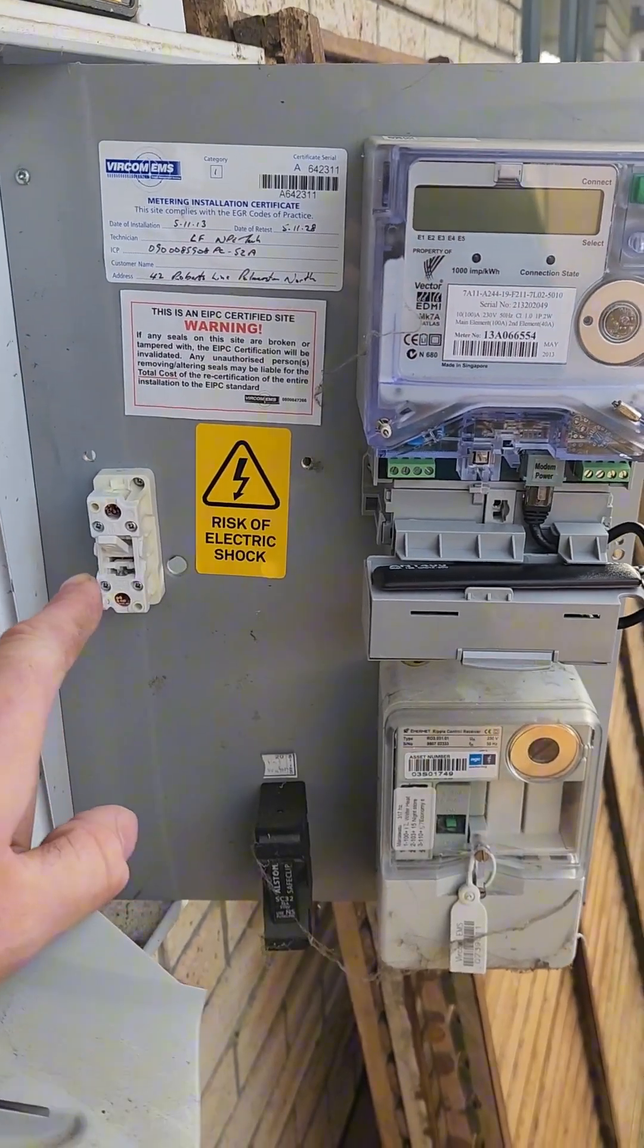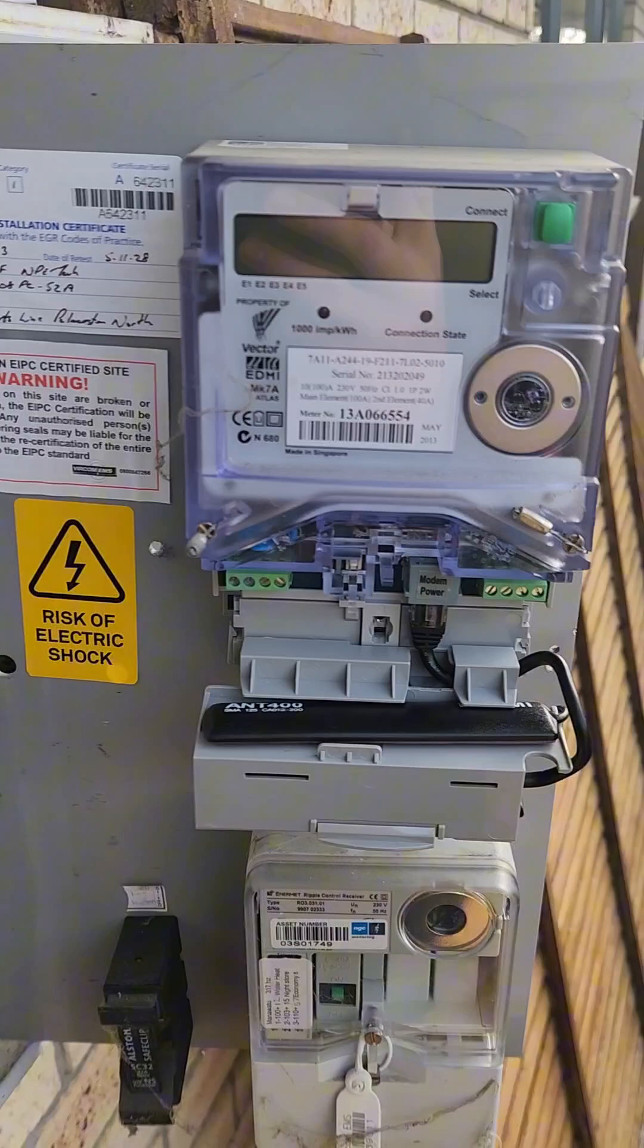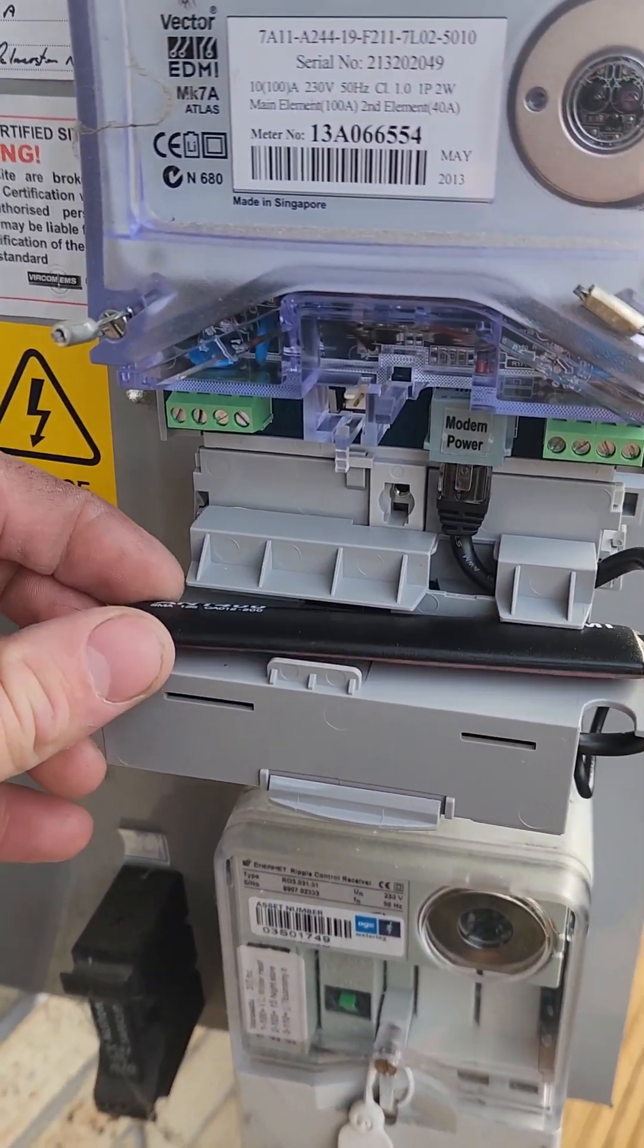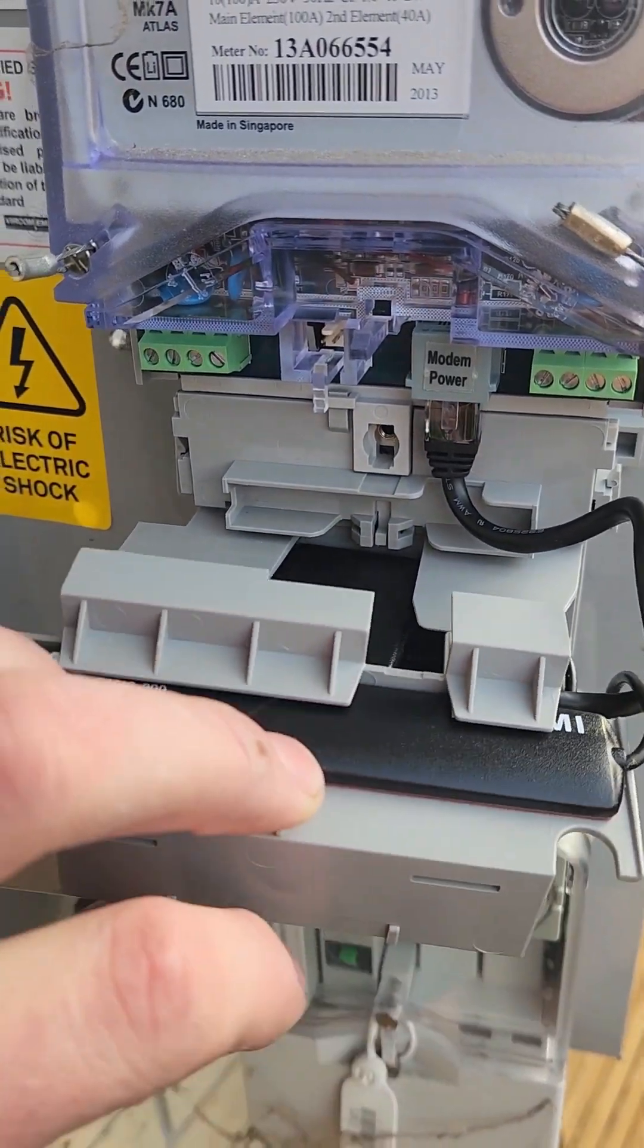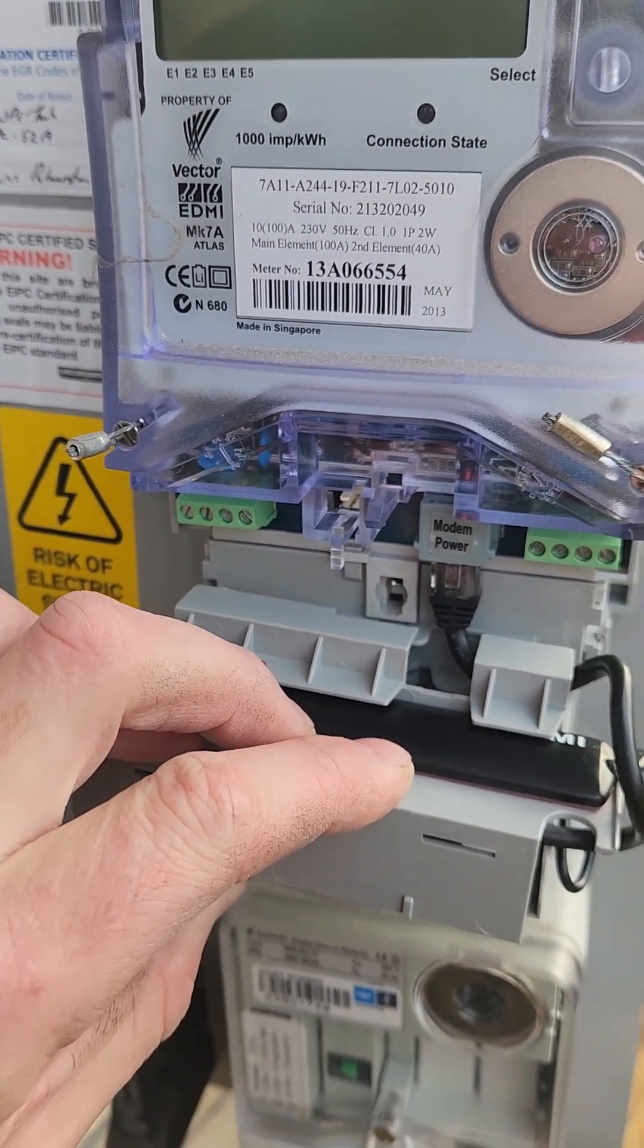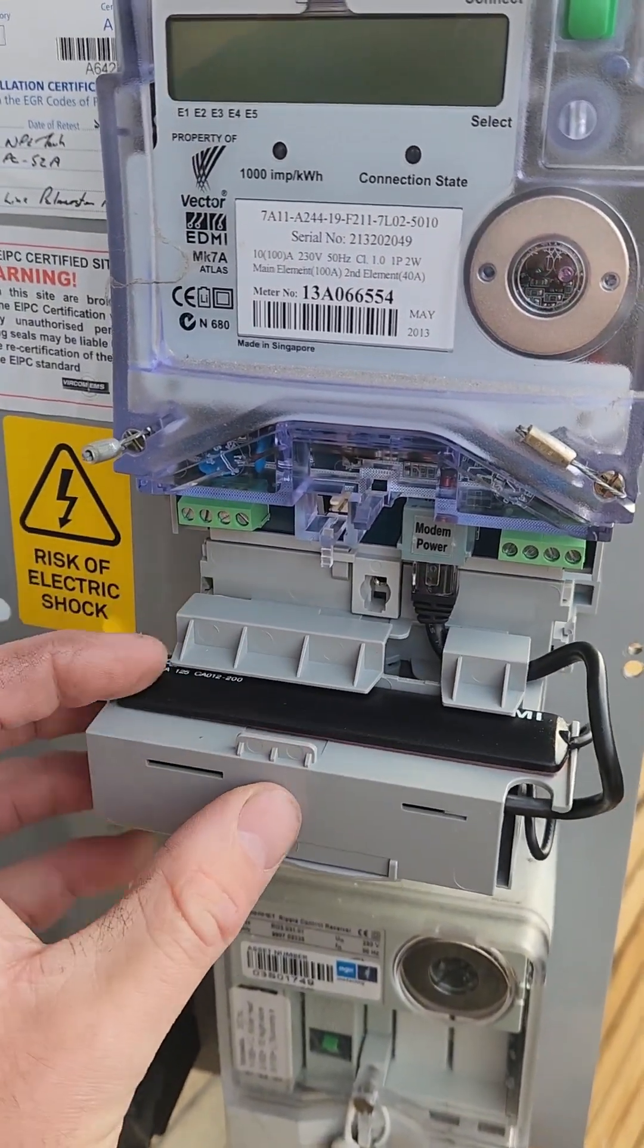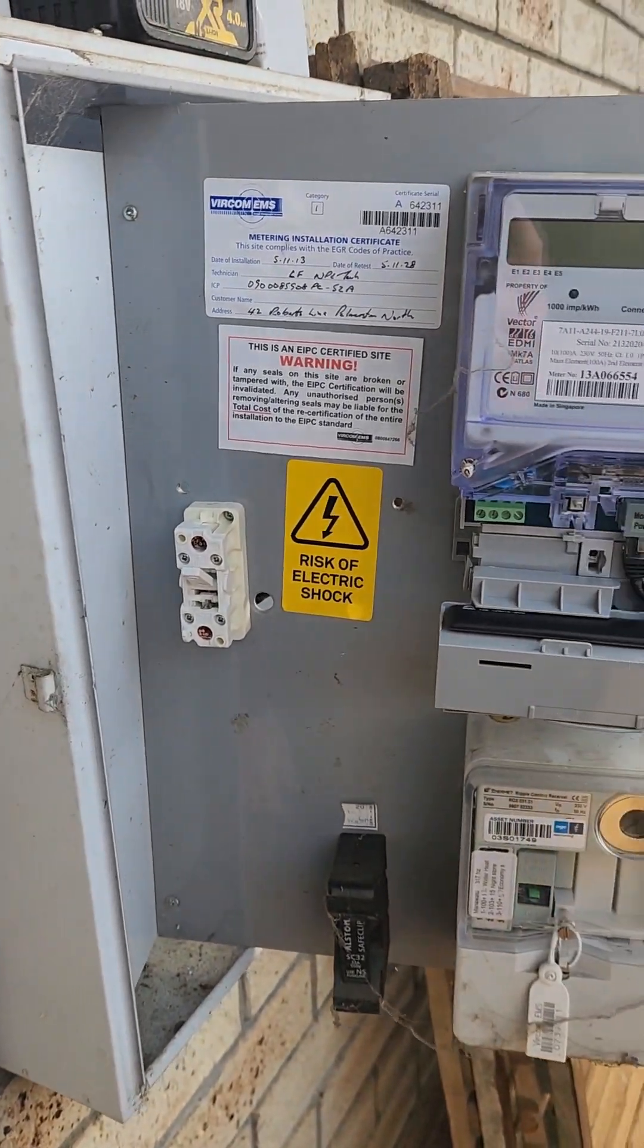So we've got that switch on now so we have now isolated the rest of the house. For those of you who have not seen in a meter, this is their little antenna and in this little area here they have the little Wi-Fi modem so they can read your power usage from their office. Just put that back together and then we'll go start on the switchboard.